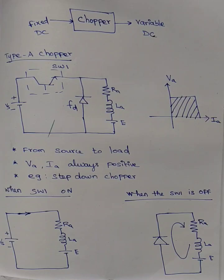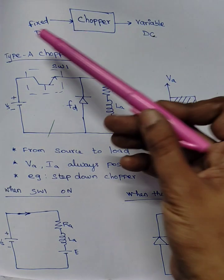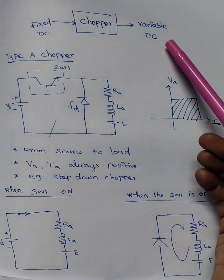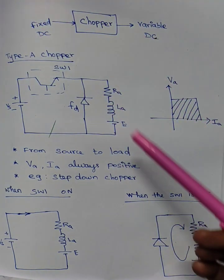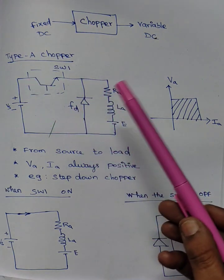Welcome to KV Tuition Academy. Now we are going to see about the chopper. A chopper is used to convert fixed DC into variable DC. First, we are going to see about Type A chopper.